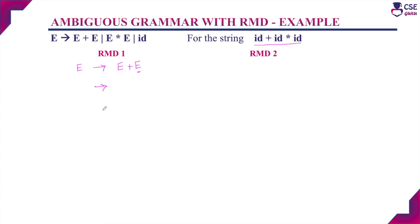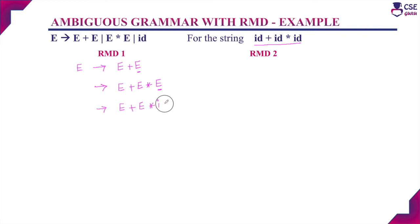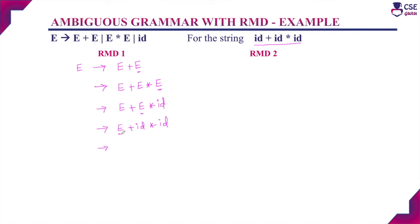Choose the rightmost non-terminal and apply the production. For this rightmost non-terminal, we apply E → E * E. Next, choose the rightmost non-terminal and apply E → id. Choose the rightmost non-terminal and apply E → id. Now we have derived the string id + id * id using the rightmost derivation.